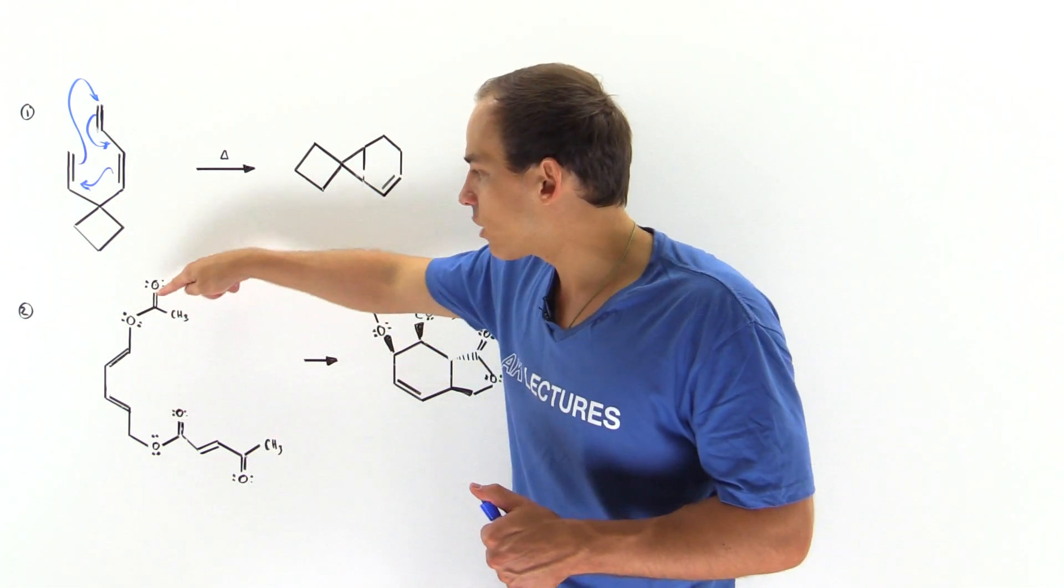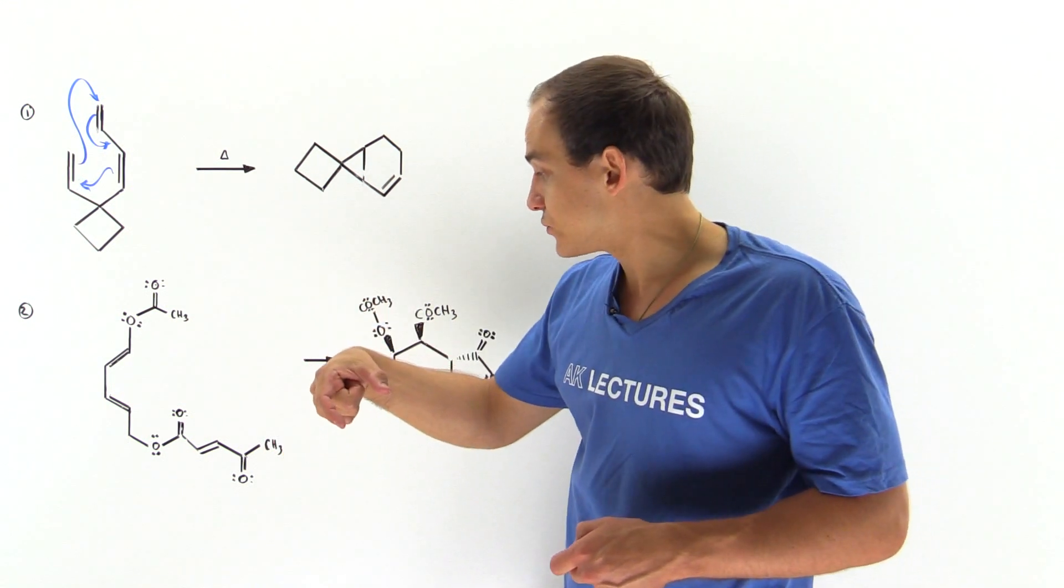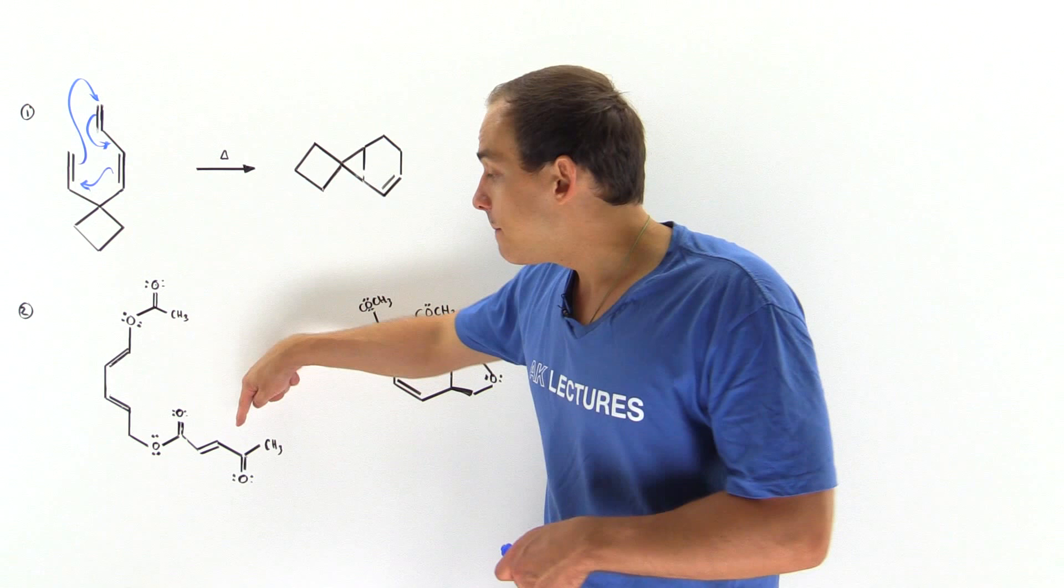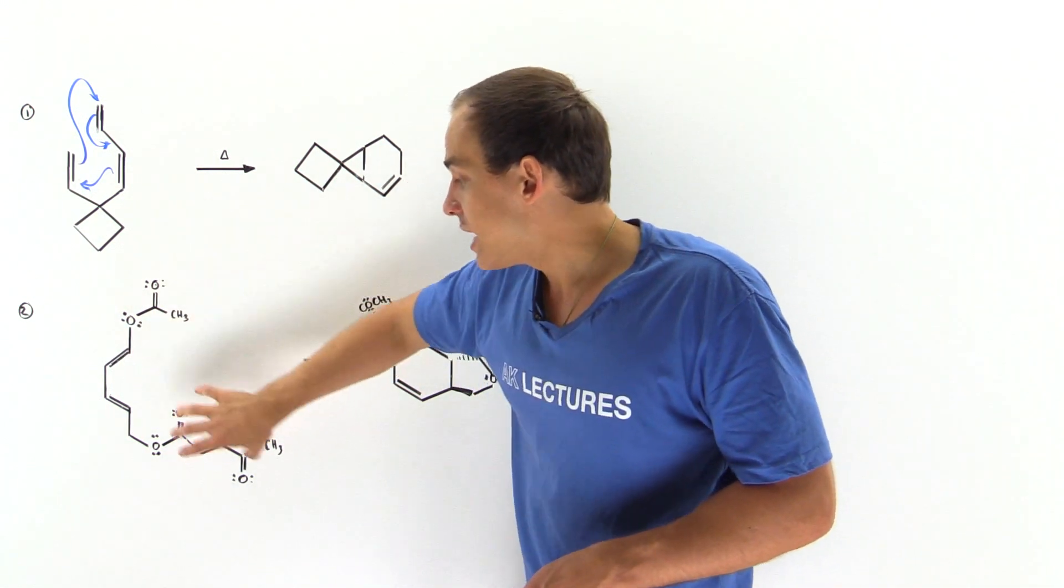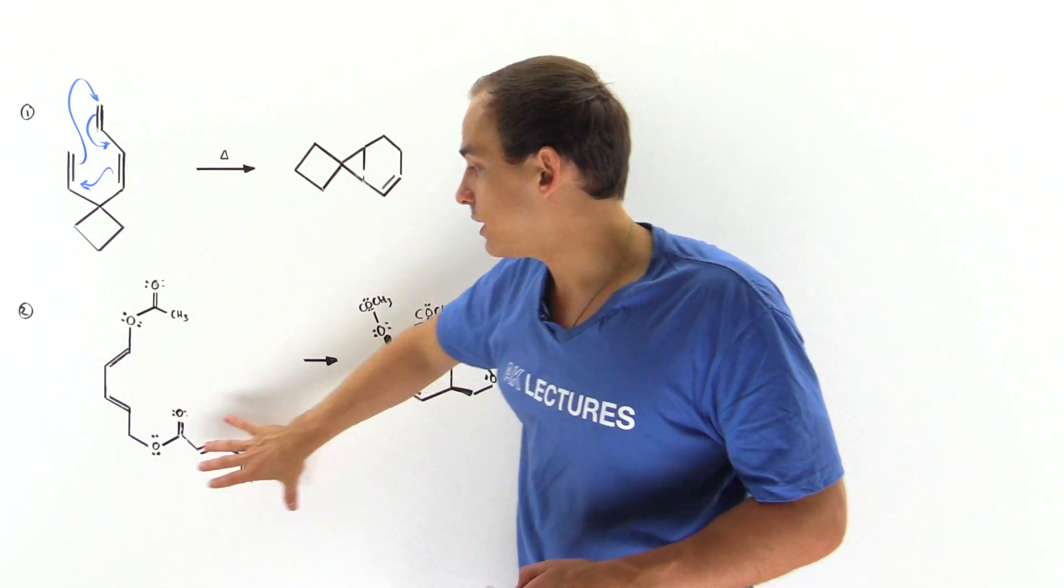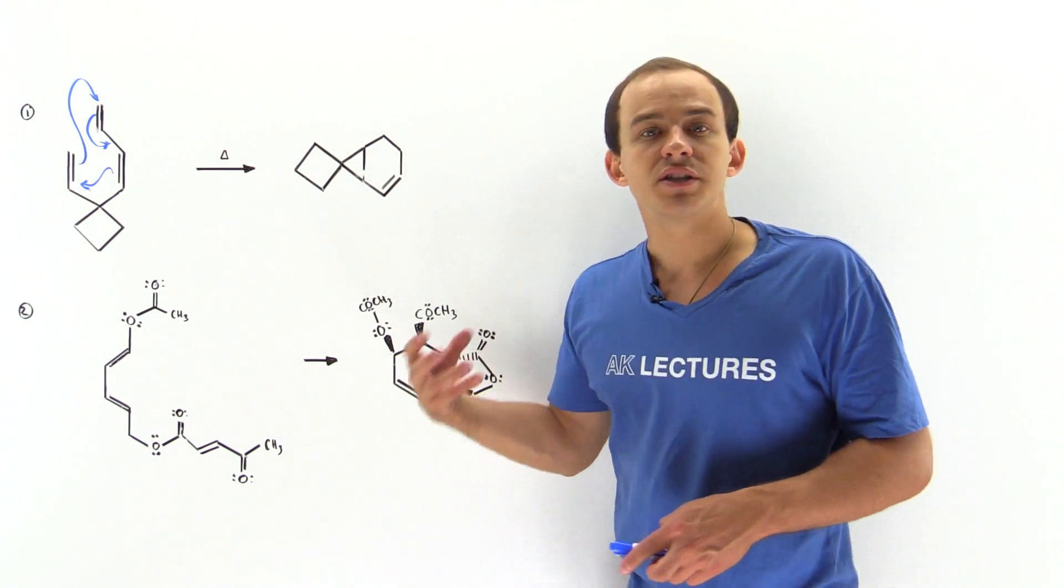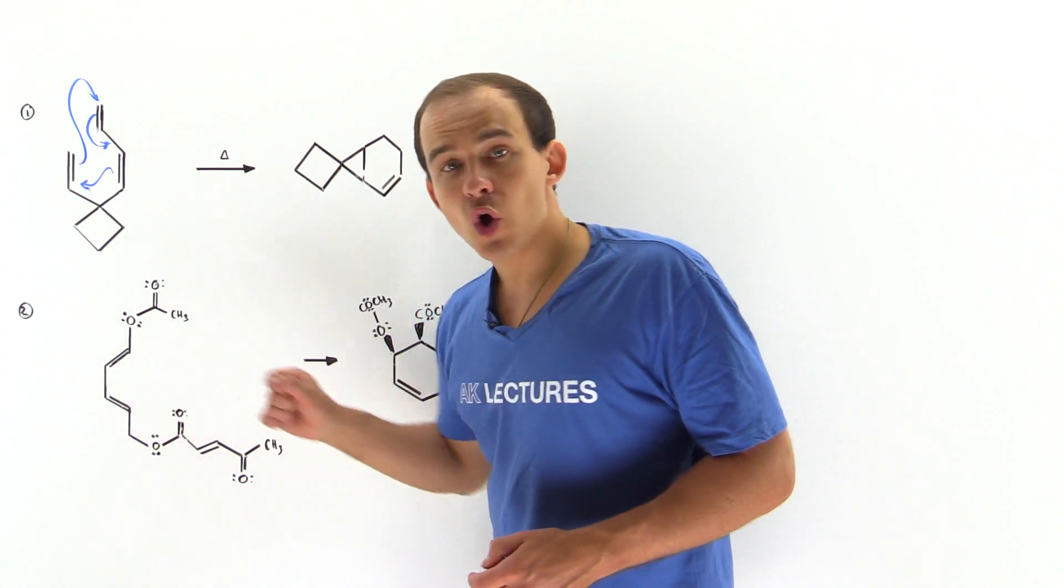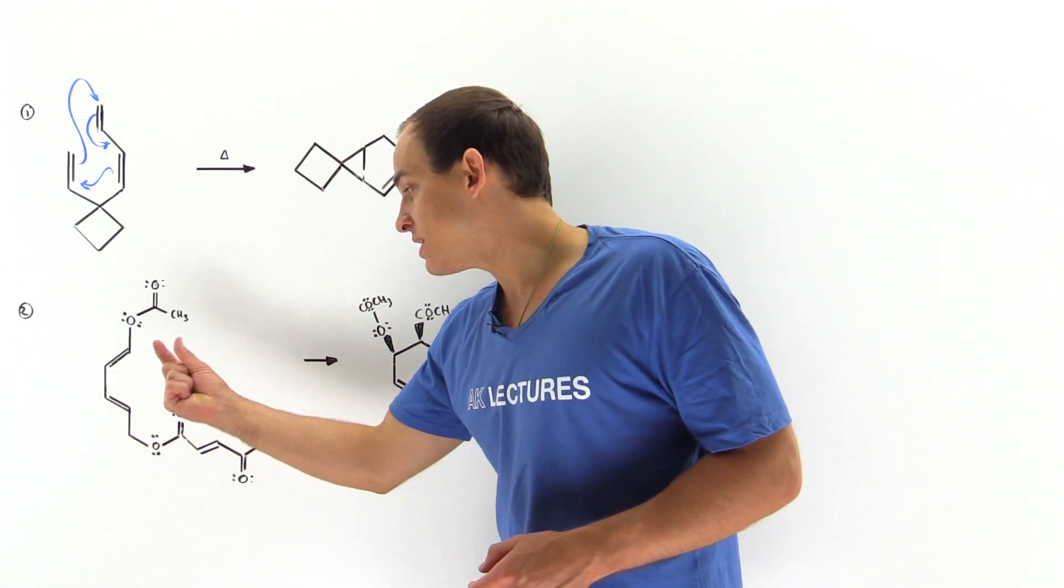We want to look for a pi bond between two carbons, and the pi bond is found all the way here. Now because of the distance, if our molecule is in this conformation, it will not react. However, if our bond rotates, if this bond rotates here,